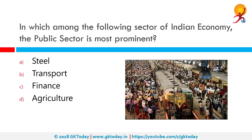In which among the following sectors of the Indian economy is the public sector most prominent? Public transport remains the primary mode of transport for most Indian citizens and India's public transport systems are among the most heavily used in the world. As a result, the correct answer here would be transport. In fact, Indian railways receives a humongous volume of commuters and is one of the largest employers in the world.